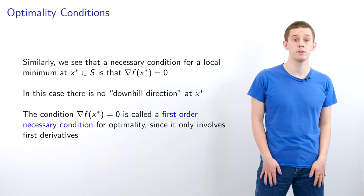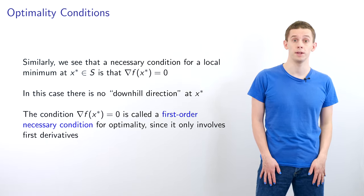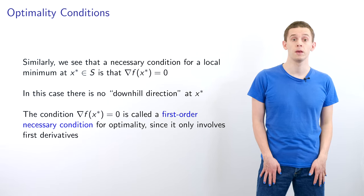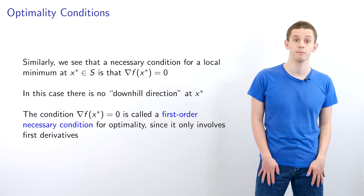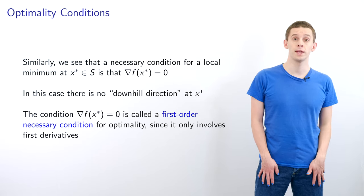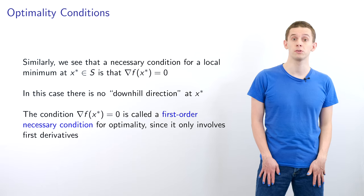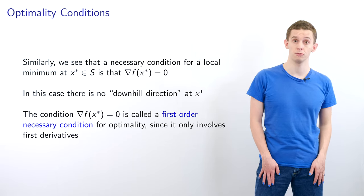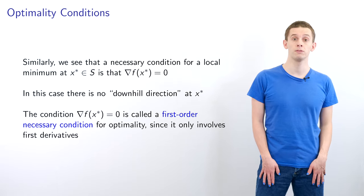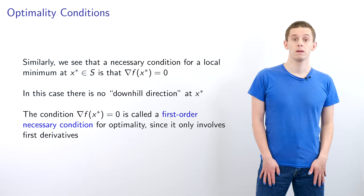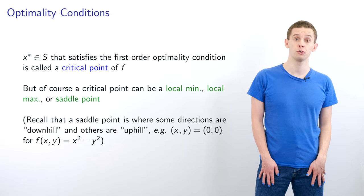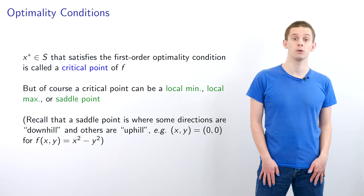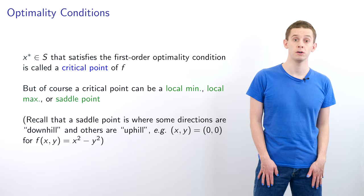Similarly, we see that a necessary condition for a local minimum at x* is that the gradient of f at x* is equal to zero — there will be no downhill direction at x*. The condition ∇f(x*) = 0 is called a first-order necessary condition for optimality, since it only involves first derivatives. A point x in S satisfying this condition is called a critical point of f.